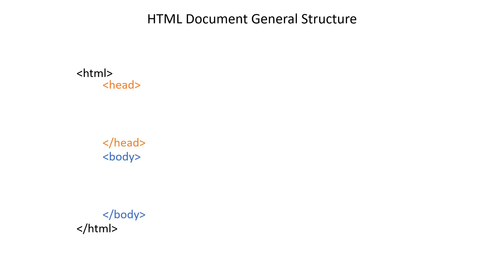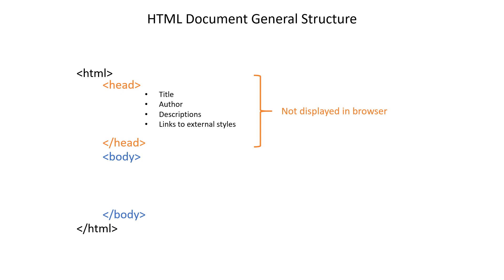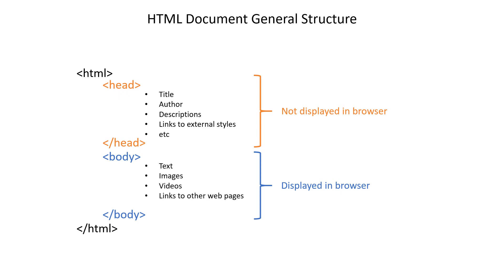HTML documents consist of the HTML element, otherwise known as the root element, which contains two sibling elements - namely the head and the body element. The head is not displayed in a browser but rather contains information such as the page title, author, page description, and references to external CSS files. The body element on the other hand contains all the actual displayed elements including text, images, videos, links to other web pages, etc. In this lesson we will learn about this general structure of HTML documents.